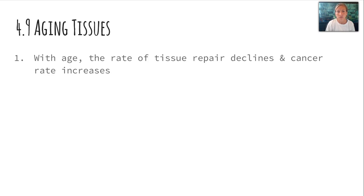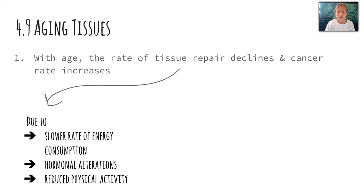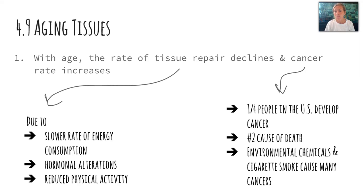Aging tissues is the next topic. Basically, with age, the rate of tissue repair declines and cancer rate increases. Tissue repair slows due to a slower rate of energy consumption, hormonal alterations, and reduced physical activity. Cancer rate increases due to environmental exposure to chemicals — cigarette smoke is a big cause of many cancers. One-fourth of people in the U.S. develop cancer — that's 25% of Americans — and it is the number two cause of death, which is why we study tissues so frequently.